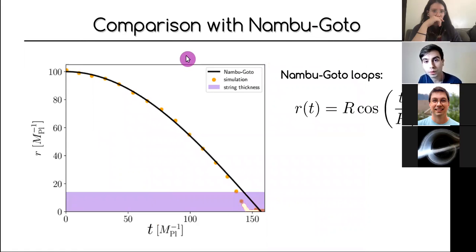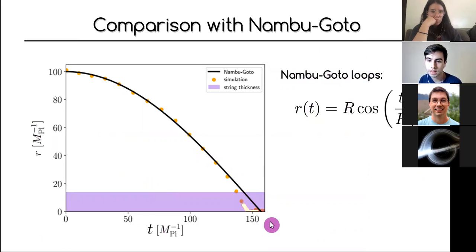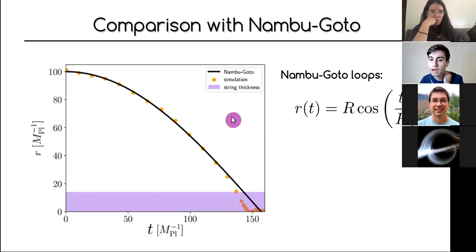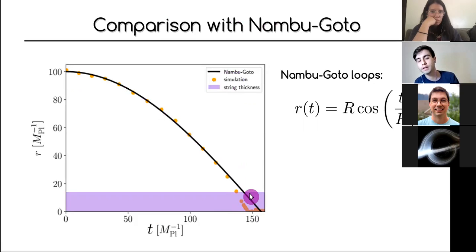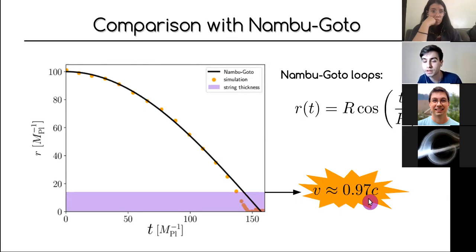We also compared with the Nambu-Goto model, which assumes infinitesimally thin strings. The loop radius as a function of time follows a cosine, and our simulation dots match the Nambu-Goto prediction well — until the loop radius reaches about the string thickness, at which point you can no longer treat it as one-dimensional and you deviate from Nambu-Goto. Remarkably, when the loop collapses the strings are moving at 0.97c — these are truly ultra-relativistic events.